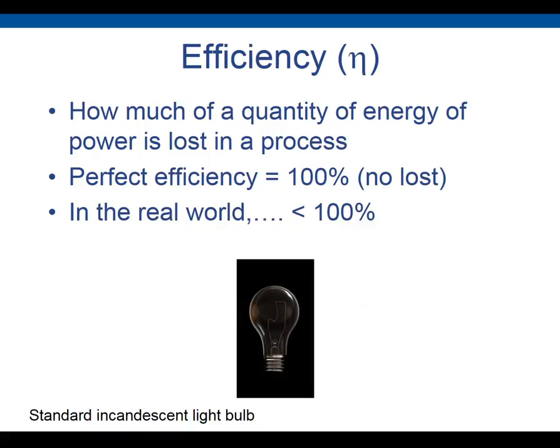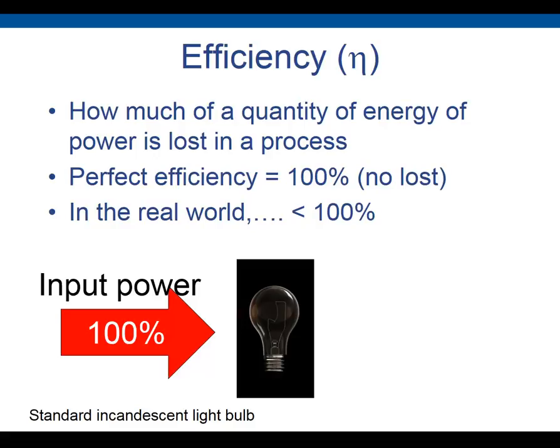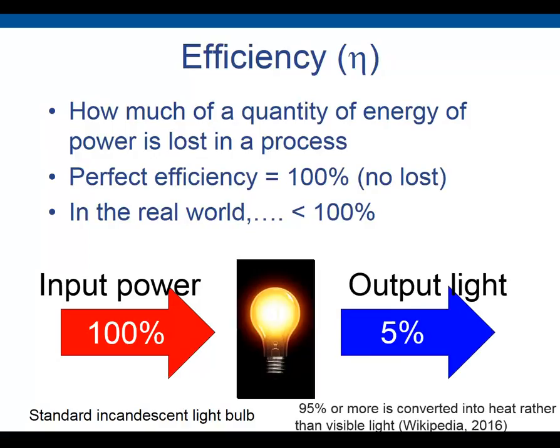Efficiency is the ratio of useful output to total input. A standard incandescent light bulb, common in the US, has very poor efficiency — only about 5% of input power becomes light. That means 95% is wasted as heat.